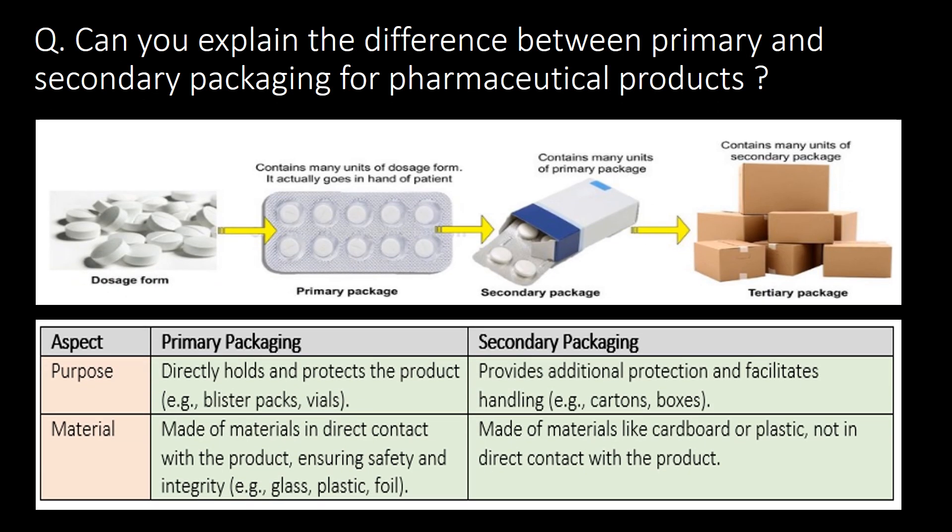Can you explain the difference between primary and secondary packaging for pharmaceutical products? You can refer to the below schematic and table for differentiating between them. The basic difference is that primary packaging comes in direct contact with the product, directly holding and protecting it, whereas secondary packaging does not come in direct contact with the drug product and provides additional protection and facilitates handling.